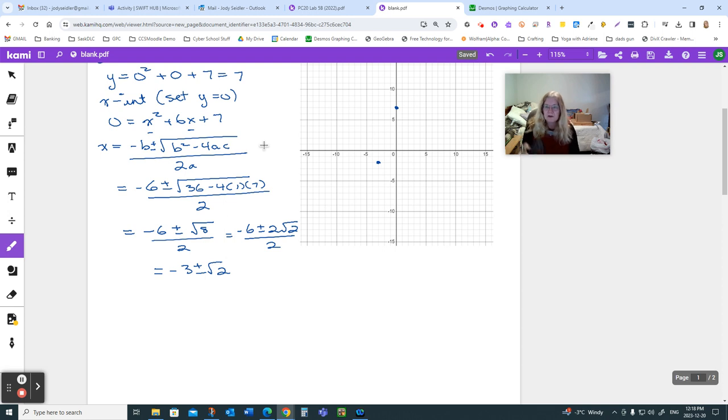Now where are those? If you grab your calculator and just say, I want to go negative 3 plus root 2, I get something like that. And I want to go negative 3 minus root 2, and I get something like that. So I have somewhere about there and somewhere about there. My x intercepts.